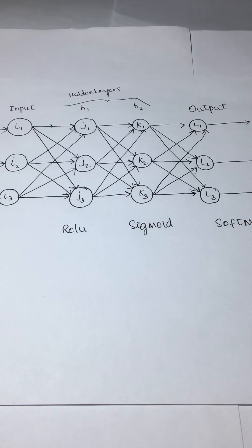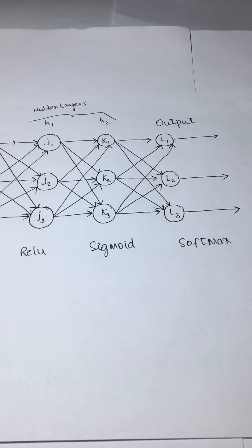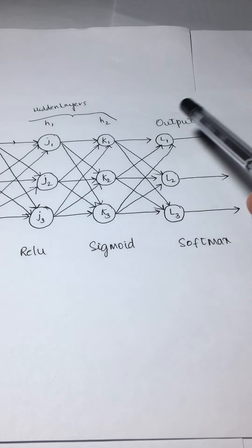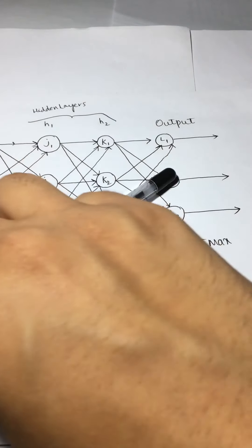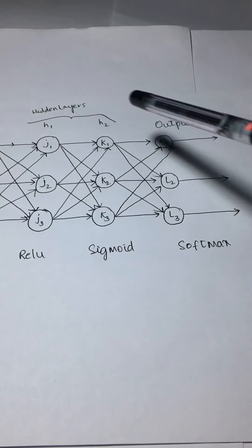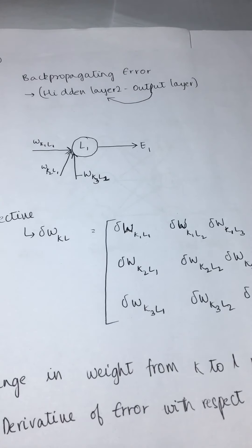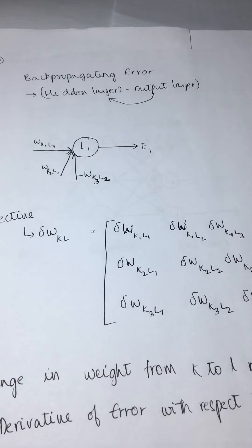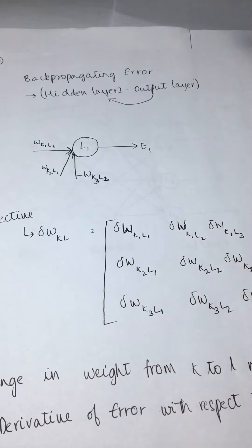What we are doing with back propagation is we are basically starting at the output stage, and moving from the output to the second hidden layer. That is what this particular thing represents — you are basically back propagating the error, moving from output to hidden layer 2.